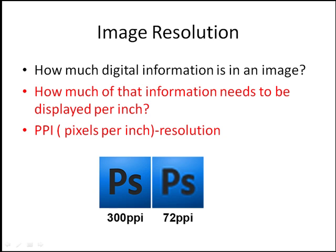The pixels per inch number is what we generally refer to as resolution. It describes how much of the total image is being displayed per inch. Of my 12 million pixels, am I displaying 300 per inch or 72 per inch? As you can see, the image with 72 pixels per inch is a lot more blurry, while the image with 300 pixels per inch appears sharp.